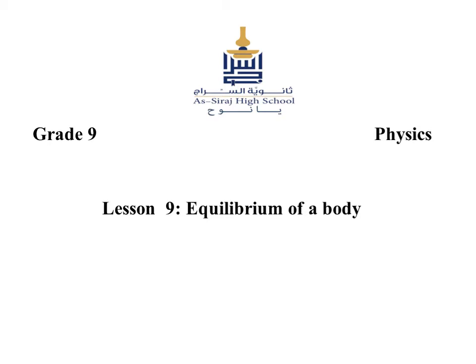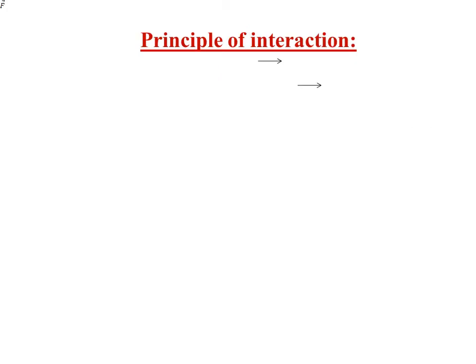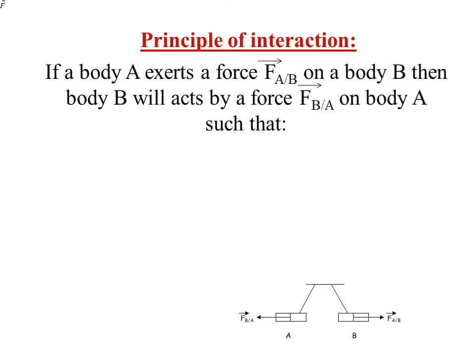In this picture, a case of repulsion between two magnets A and B. If magnet A exerts a force F_AB on magnet B, this force directed to the right, then magnet B will act by a force F_BA on magnet A.